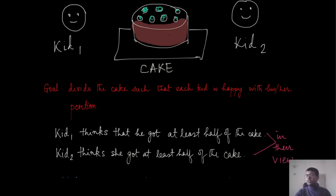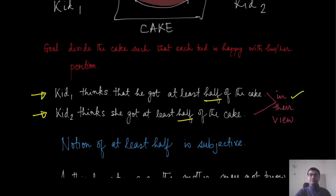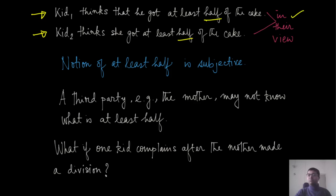Fair division should mean that kid one thinks he got at least half of this cake, and kid two also thinks she got at least half of this cake. This definition of half is actually subjective — in their own view it should be half. The mother, as a third party, may not know what their view is, because even though she knows her kids well, she might not know exactly how much a particular kid values the icing on the cake or the cherry on top.